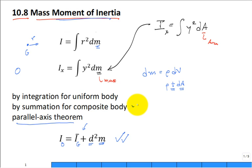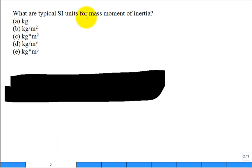We can do it for composite bodies, and we can do it for uniform bodies. What are the typical SI units for mass moment of inertia? So what was the equation again? It was the summation or the integration of some distance squared. You could put r squared dm.